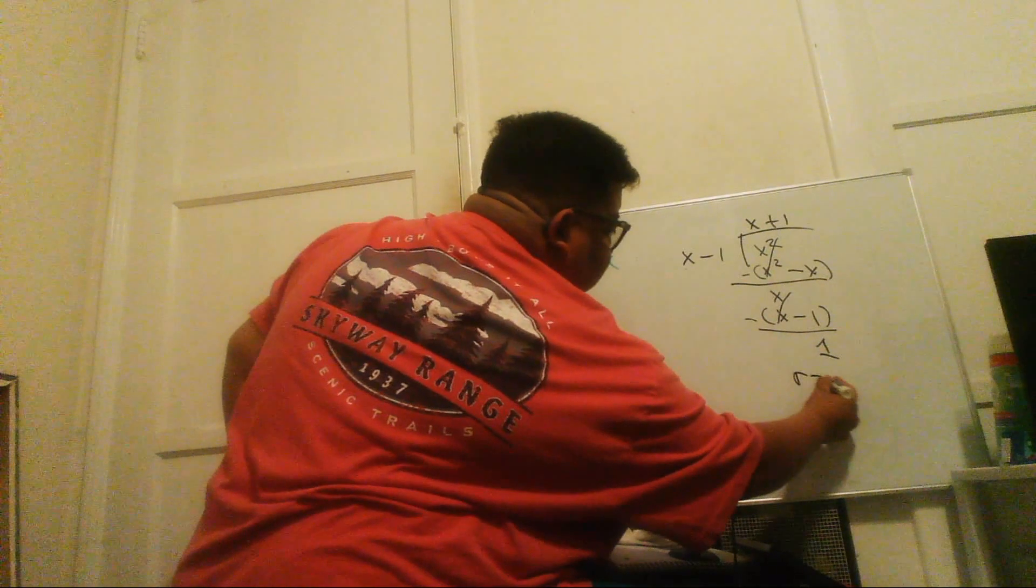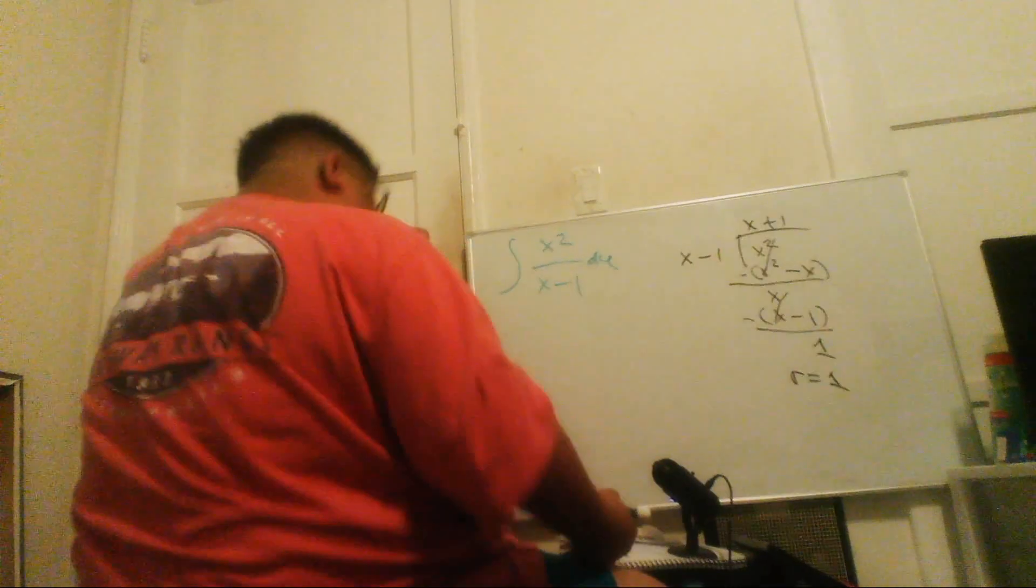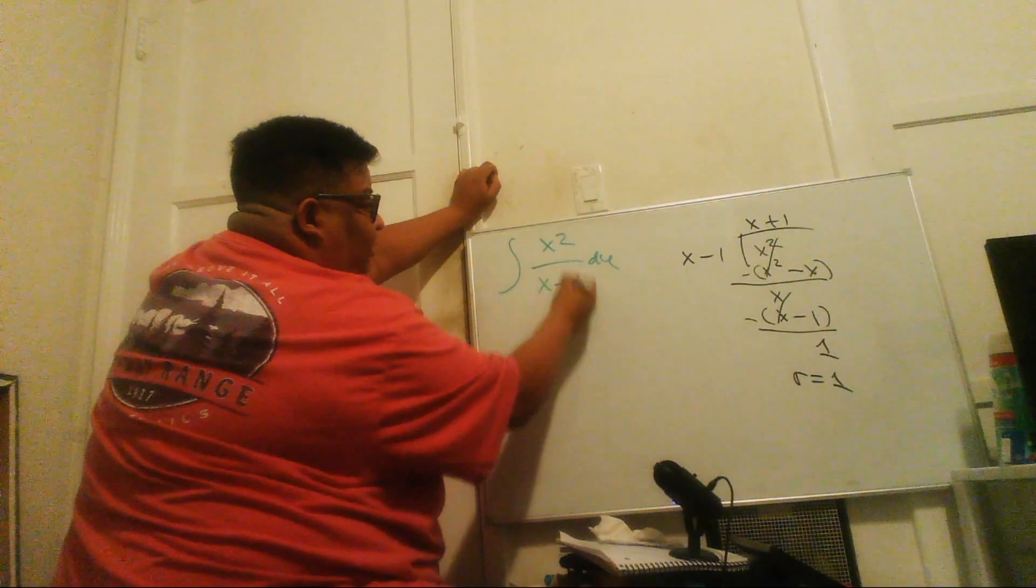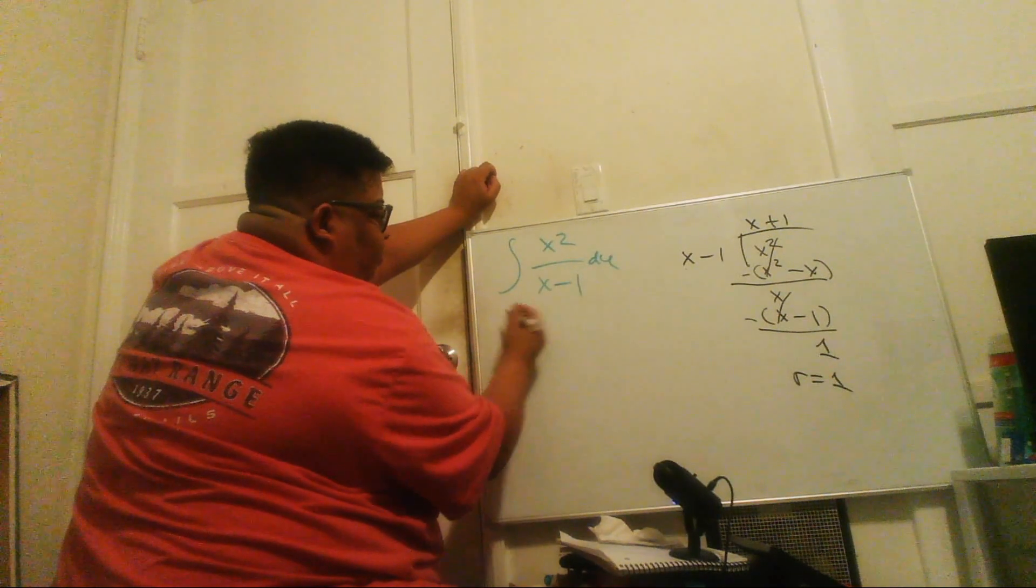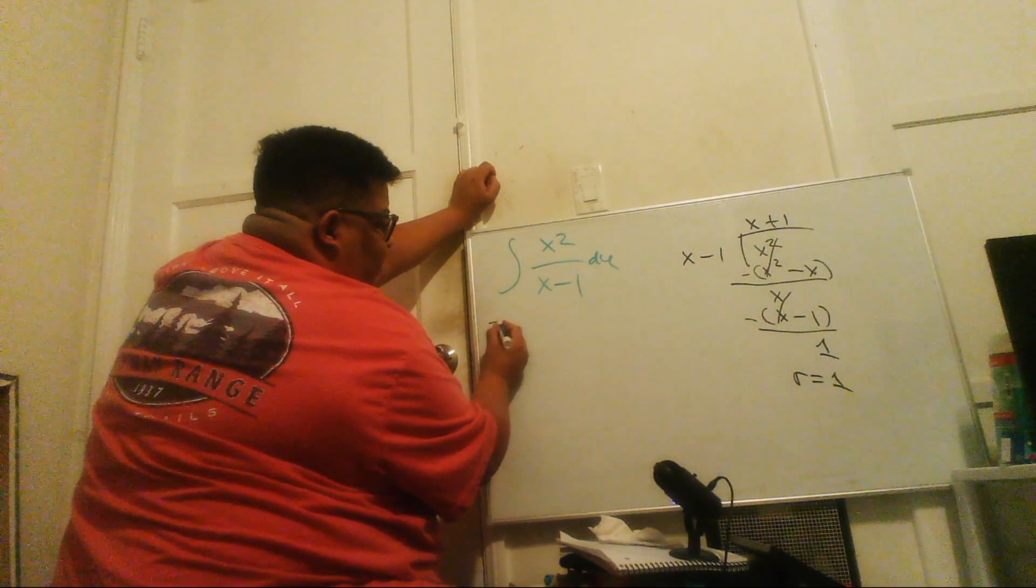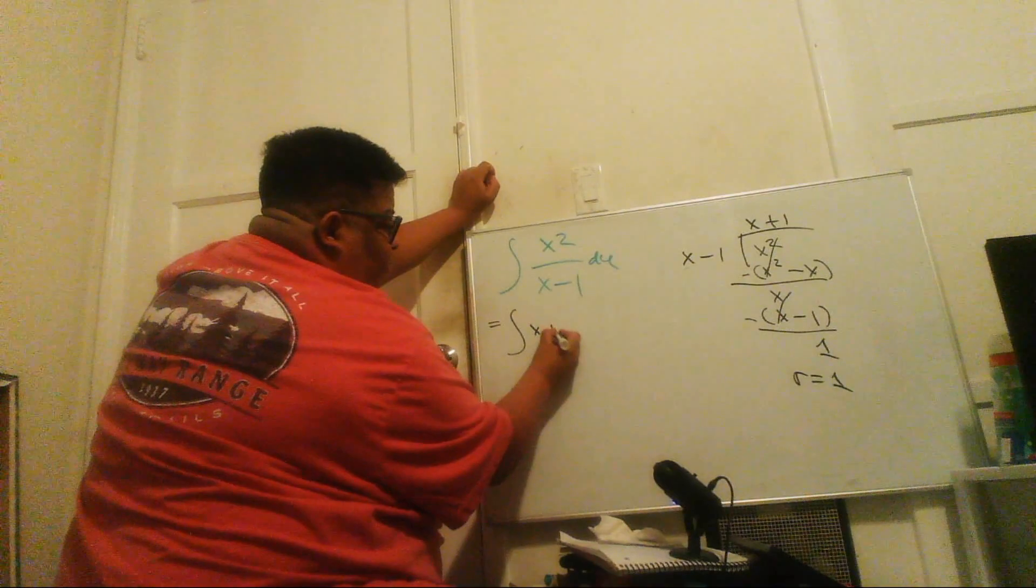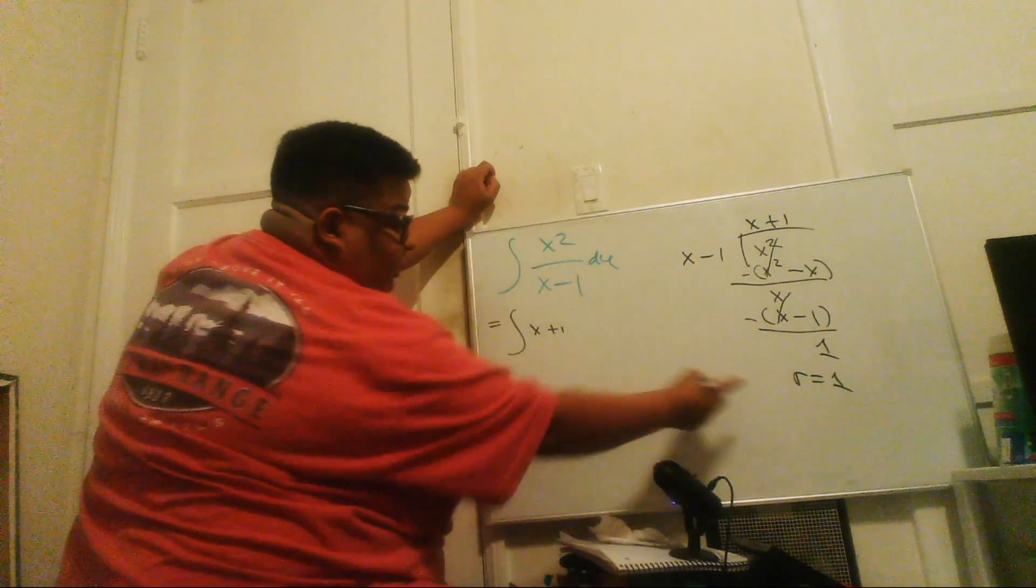So remainder equals 1. Okay, so now because we divided the rational function, we're going to replace the integral by its parts. So it's going to be equal to x plus 1, and then that will be the remainder.